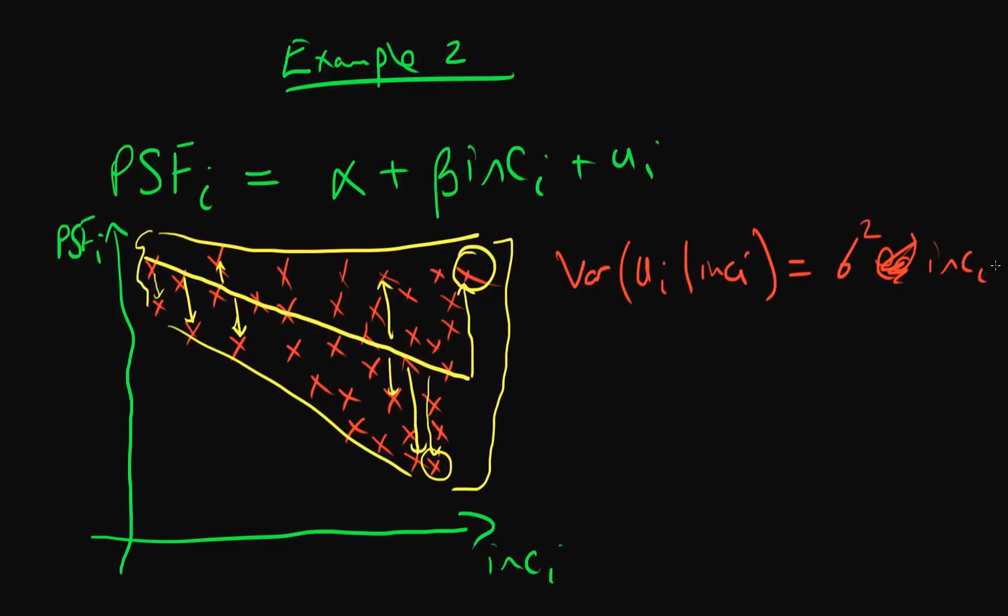or not education here, an individual's level of income. So we might expect that the variance of our points is an increasing linear function of income, perhaps. And notice that in this circumstance, we don't have the condition of homoscedasticity satisfied because the variance of our errors given an individual's level of education does not equal some constant sigma squared.